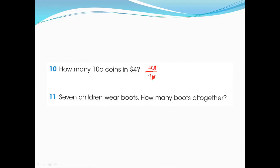The answer is 40. So there are 40 ten-cent coins in four dollars. In one dollar we have 100 cents, so in four dollars we have 400 cents. Four hundred divided by ten equals 40, or you can verify: 40 multiplied by ten equals 400.